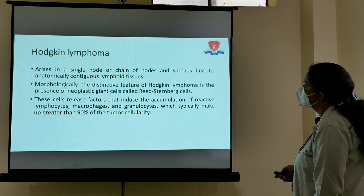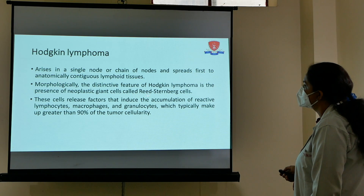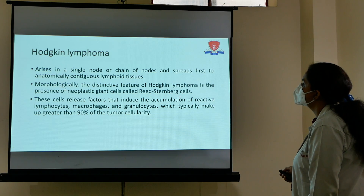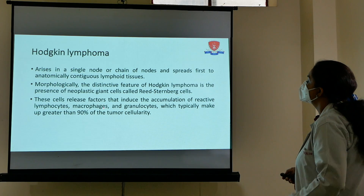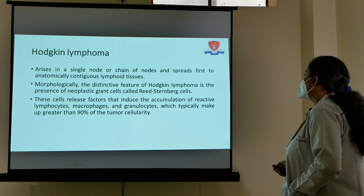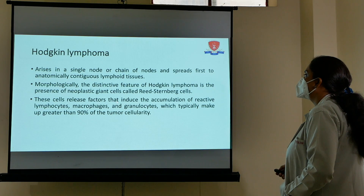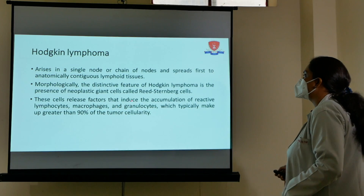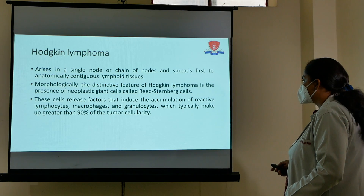Hodgkin's lymphoma is characterized by neoplastic giant cells called Reed-Sternberg (RS) cells. These RS cells release factors which cause accumulation of reactive lymphocytes, macrophages, and granulocytes. Whenever there is a polymorphous population — where other types of cells are also seen in a lymphoma — you will think of Hodgkin's lymphoma.